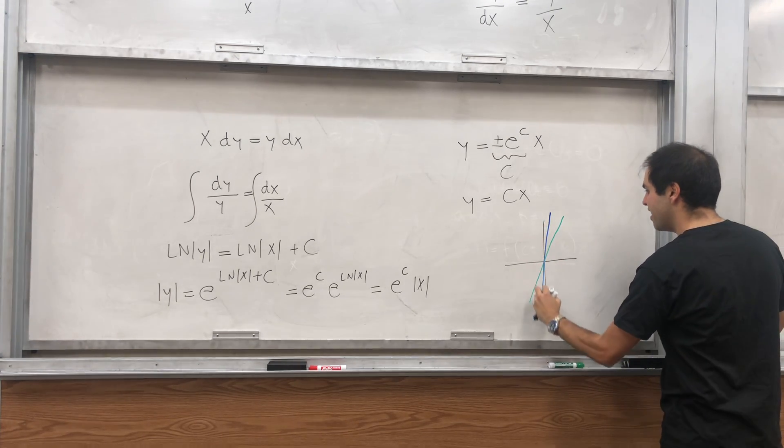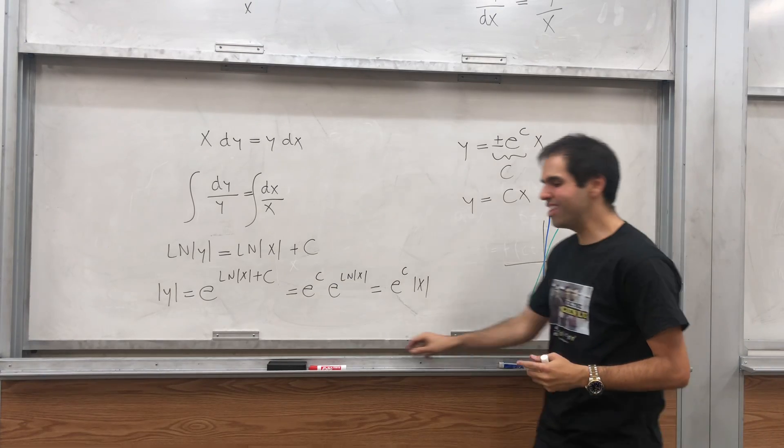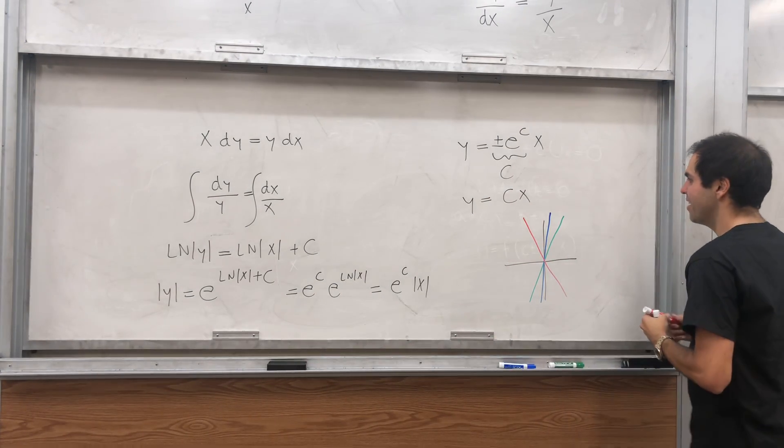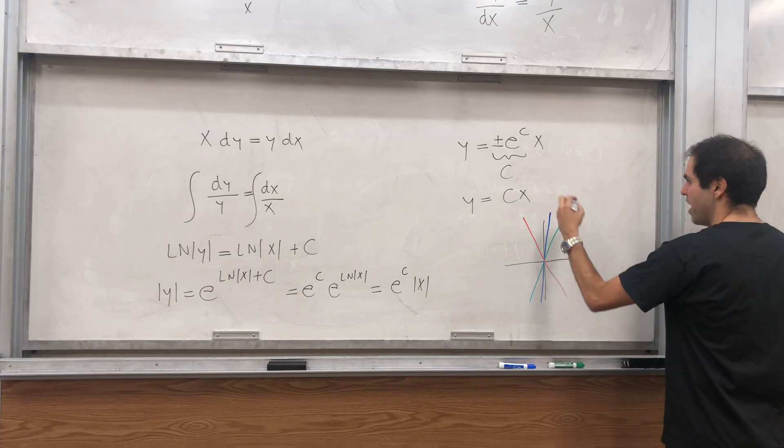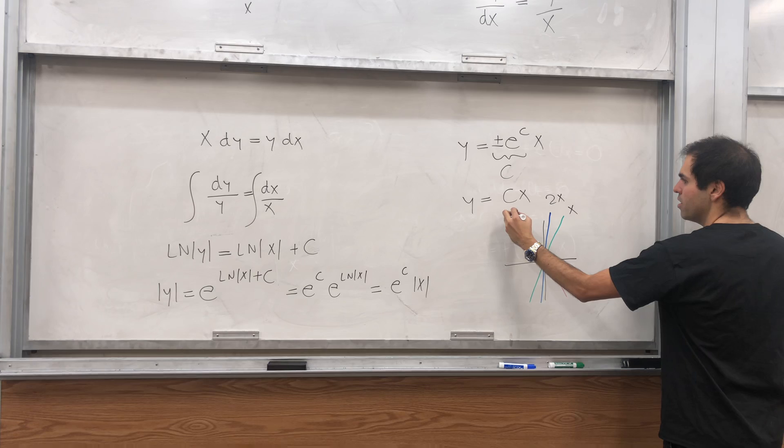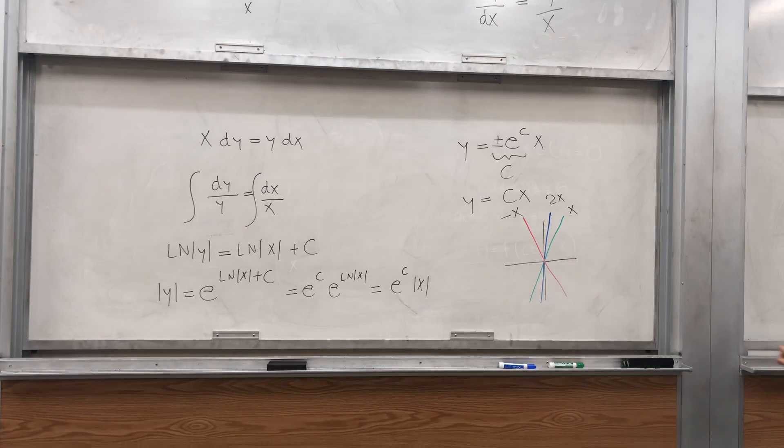So what we get is u is like constant on this line, maybe constant on this line. So we have this nice foliation of the plane. So that might be cx, maybe x, there might be 2x, there might be minus x, whatever.